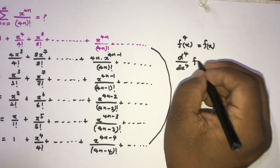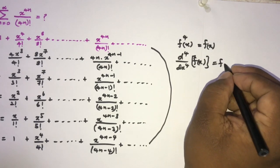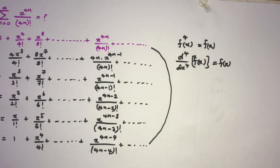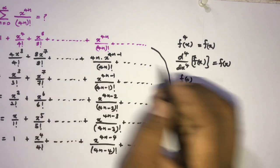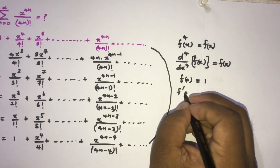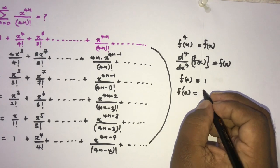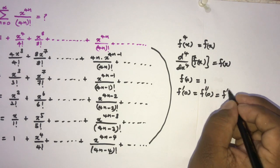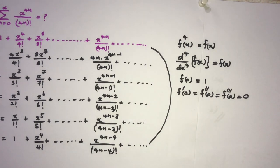We know f of 0 — if we plug in 0 — f of 0 is equal to 1. Then f prime of 0 is equal to 0, f double prime of 0 is equal to 0, and the third derivative at 0 is also equal to 0.